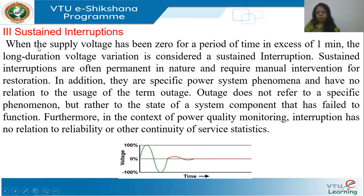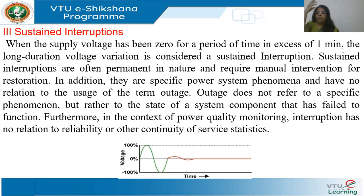Sustained interruption means voltage falls to zero or close to zero for more than one minute. Sustained interruptions are often permanent in nature and require manual intervention — for example, a tree falling and cutting off a line. Some power system phenomena can also result in sustained interruption.